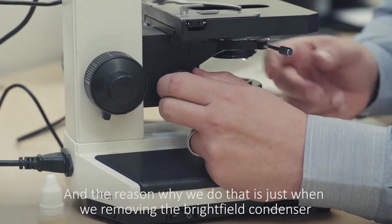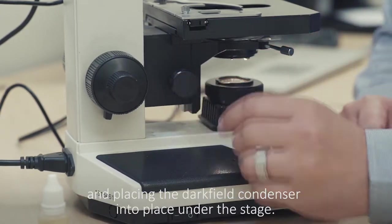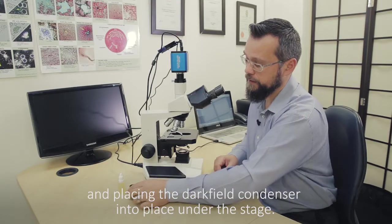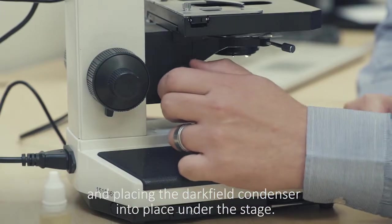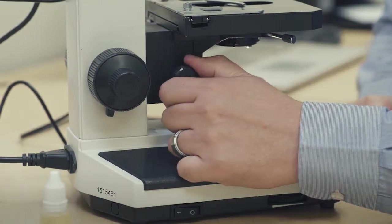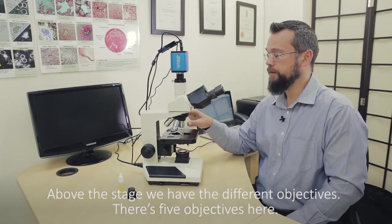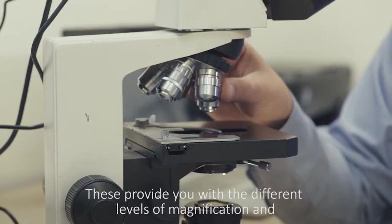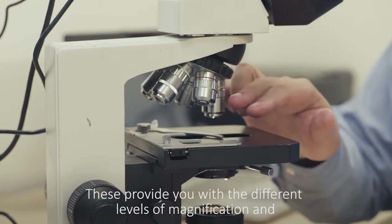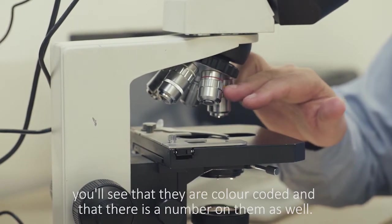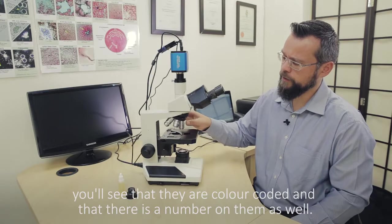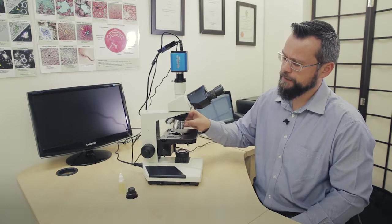Above the stage we have the different objectives. There's five objectives here. These provide you with the different levels of magnification. You'll see that they are color coded and there's a number on them as well. These slide into position fairly easily.